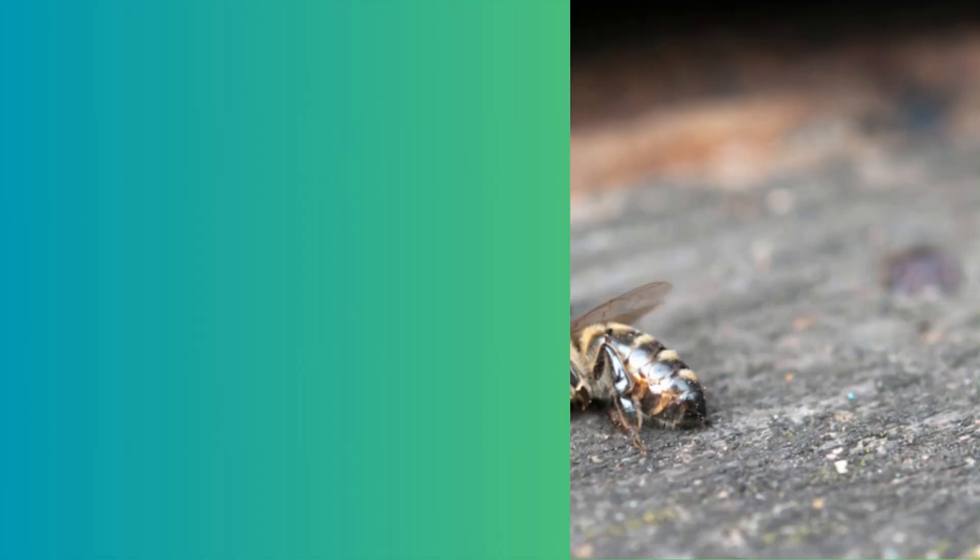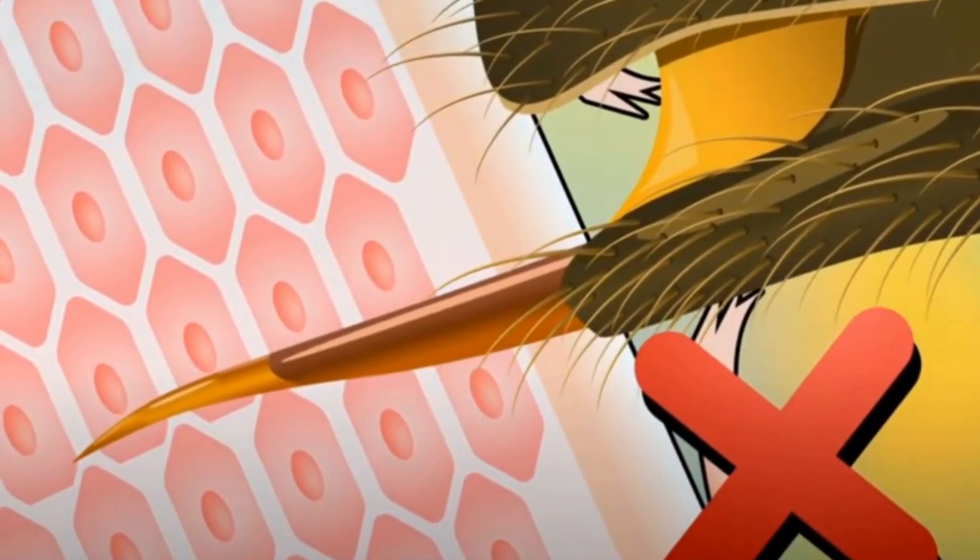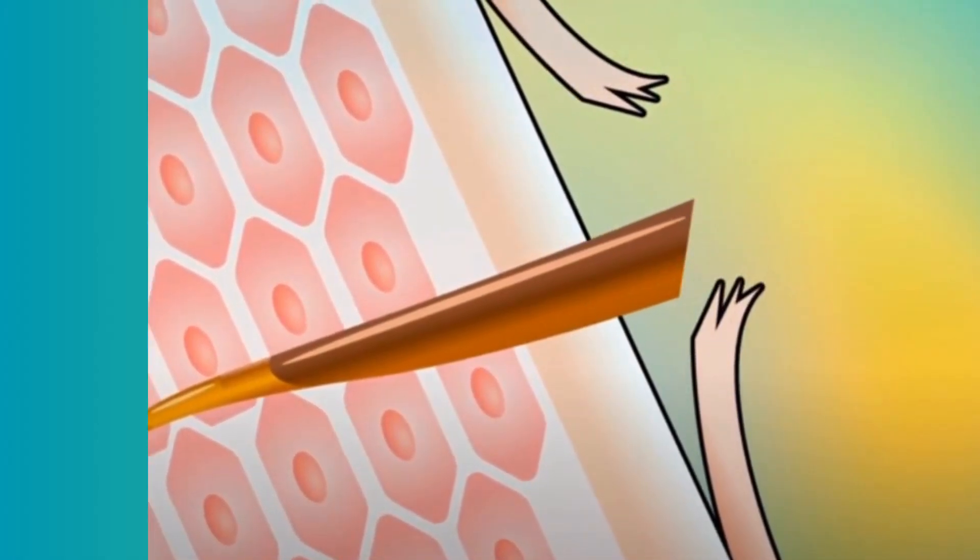That's because a bee stinger is barbed, which means it can lodge into the victim's skin, preventing the bee from pulling it back out. Talk about dedication.